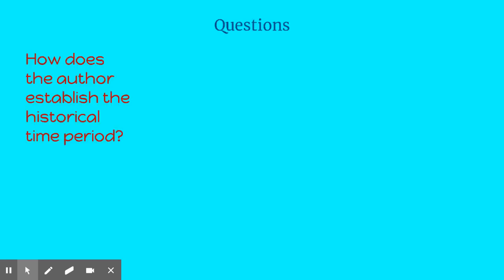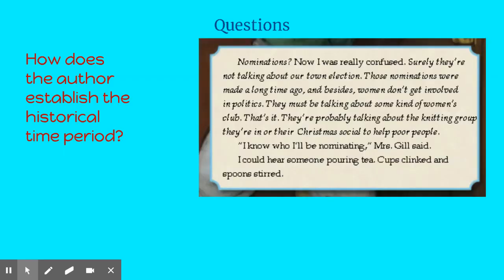The question I want to start with is: how does the author establish the historical time period in our story? I want you to pause the video and look throughout the text to find some evidence of how you know what the time period is. Okay — what I came up with is the sentence where it says "women don't get involved in politics." That wouldn't be a phrase you would hear now, because every citizen has a right to vote and get involved. So this gives you an idea of the mindset of the people at that time.